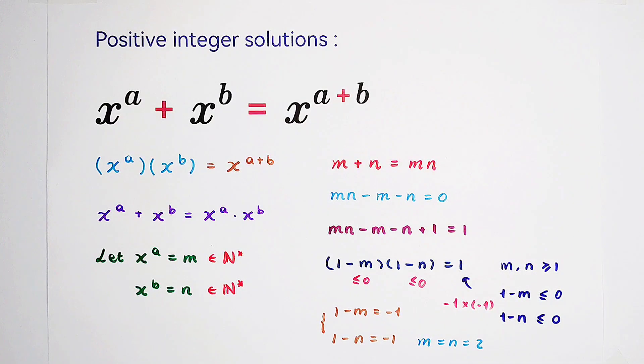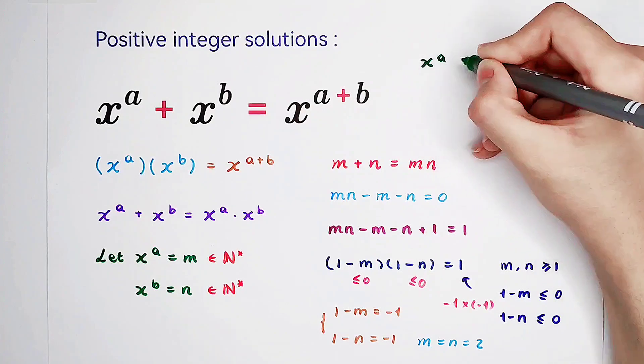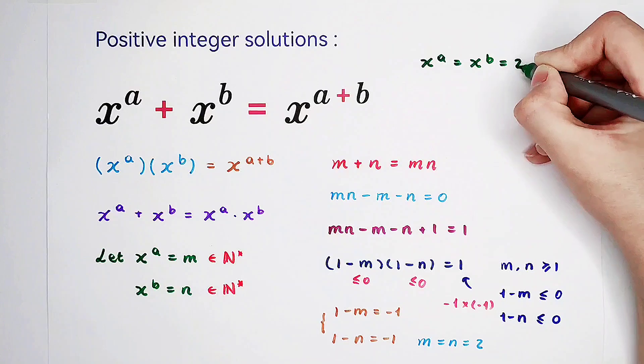We've successfully solved m and n. Now, m is this and n is this. So that means x to the power of a equals x to the power of b equals 2.